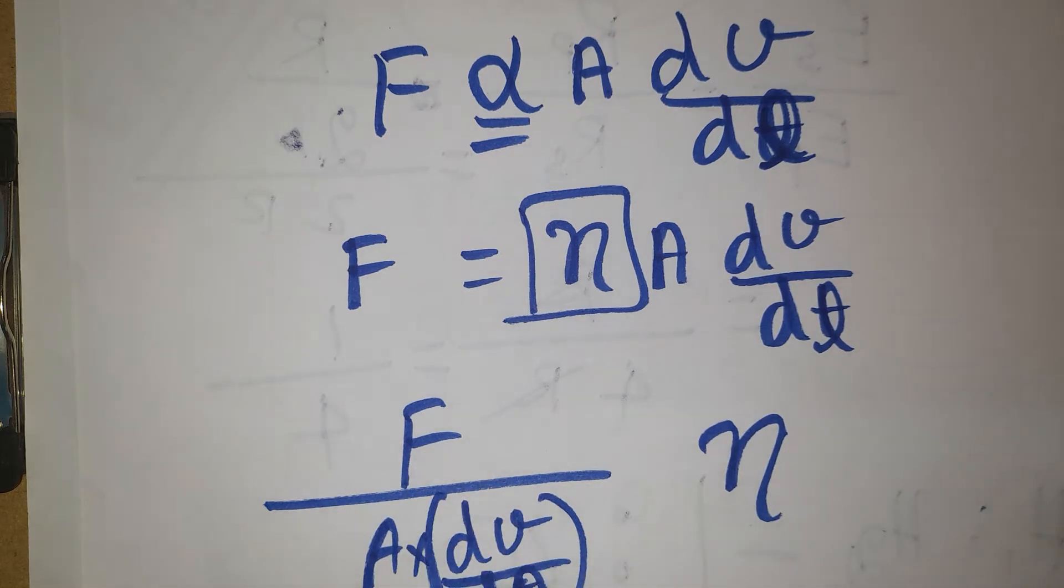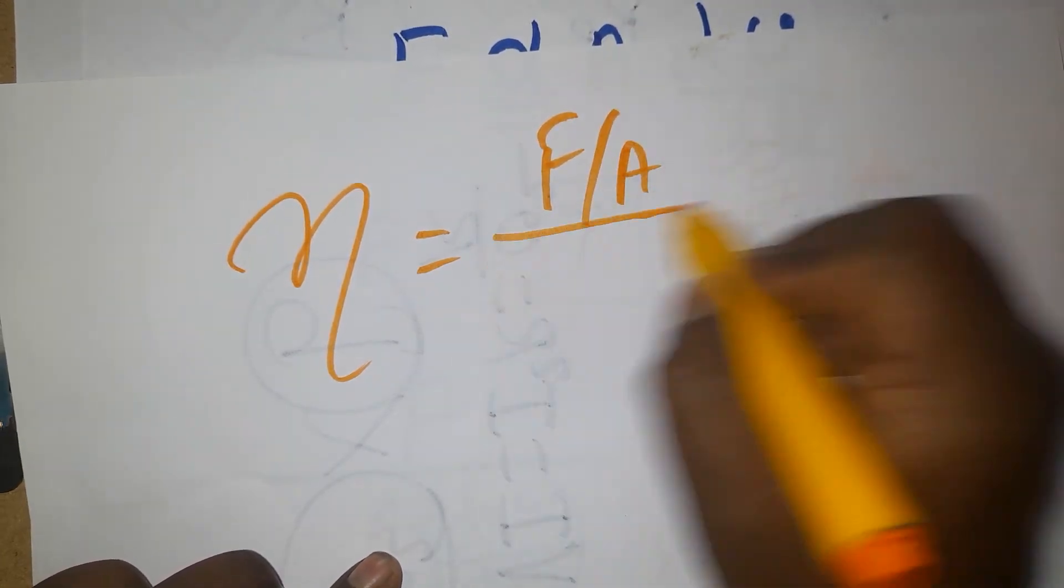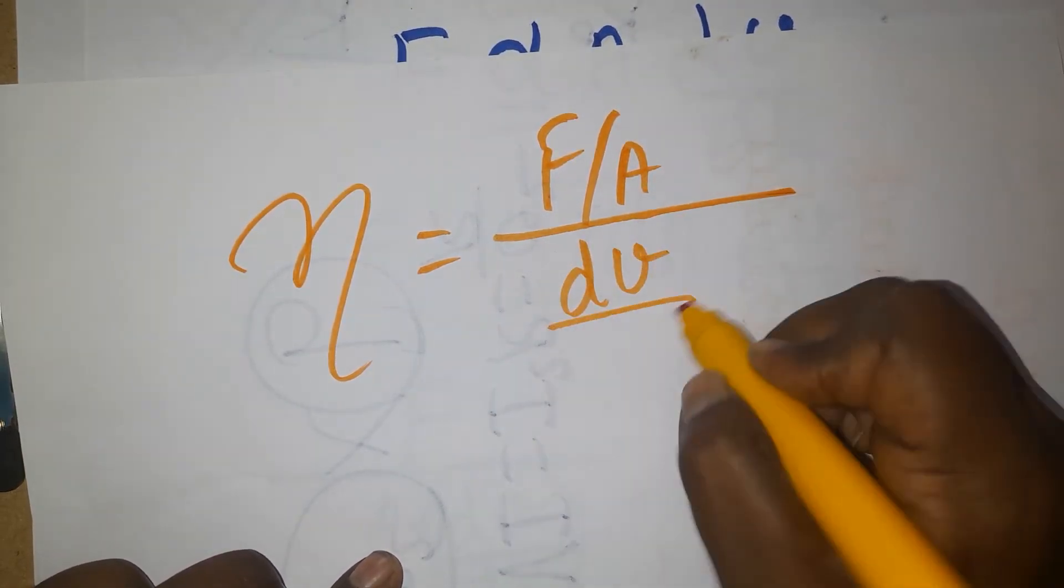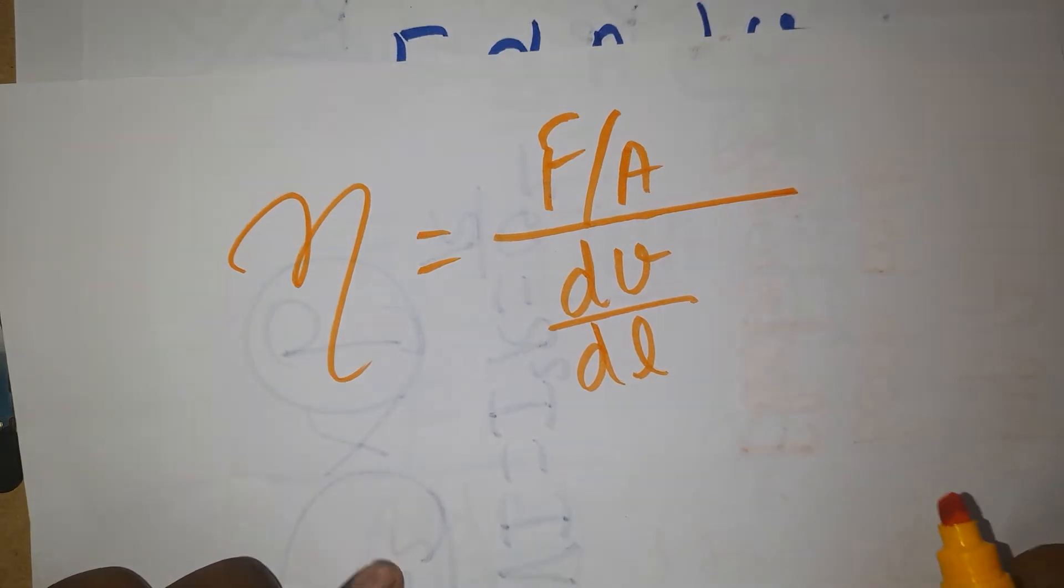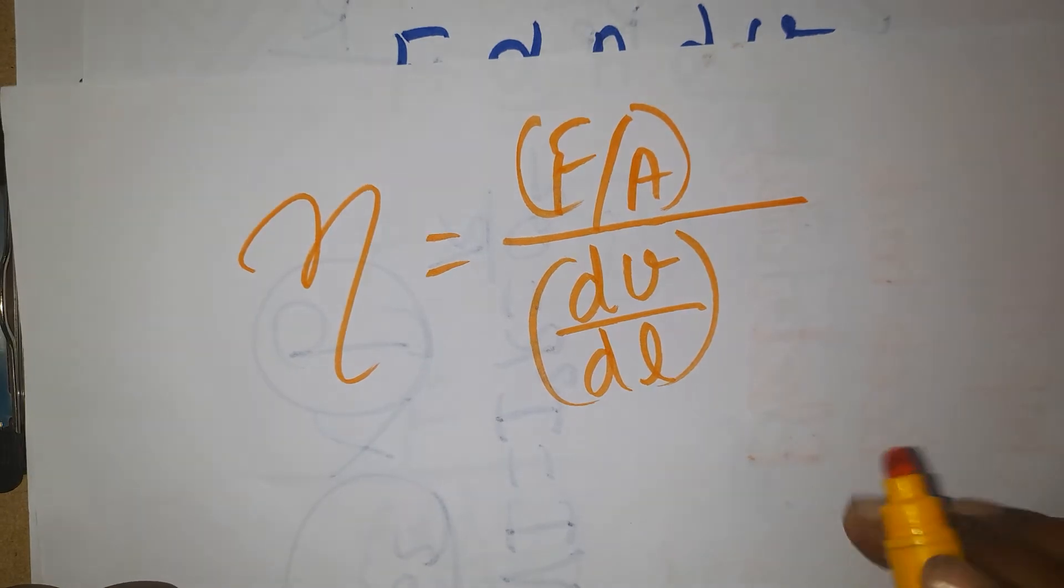Force per unit area is stress, we can call it. So coefficient of viscosity: the numerator will be force per unit area, denominator will be changing velocity with respect to the length. This is stress, and this is called velocity gradient.